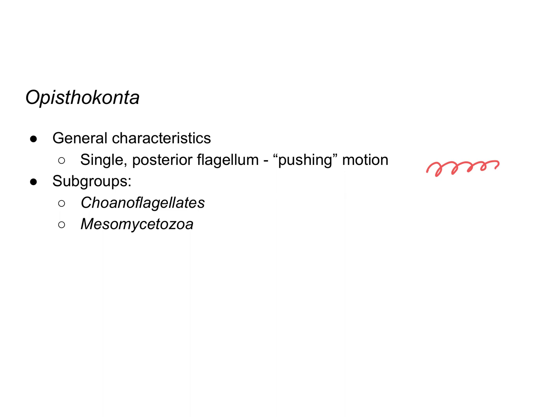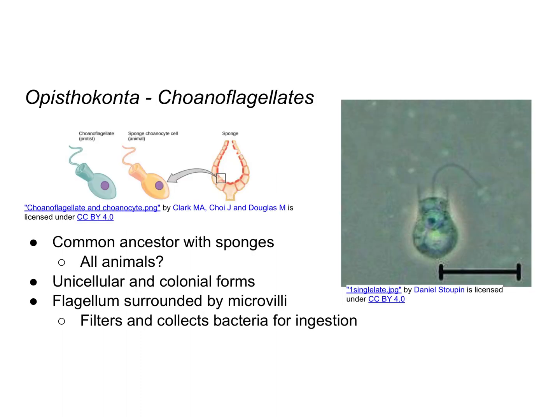We're going to take a closer look at the two subgroups: choanoflagellates and mesomycetazoa. First, we'll look at the choanoflagellates. These are really interesting because they likely have a common ancestor with sponges. You can see here that the choanoflagellate and the choanocyte cell from a sponge look basically the same.